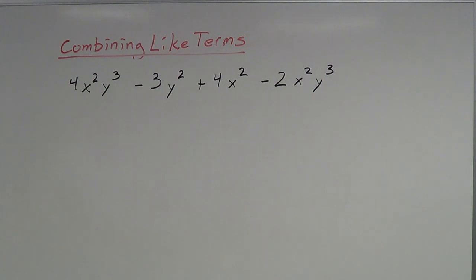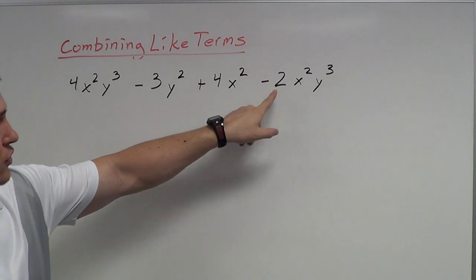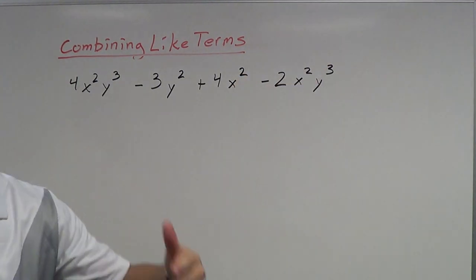In this case, this algebraic expression that I have is 4x²y³ - 3y² + 4x² - 2x²y³. You could also say cubed instead of to the third, like I said earlier.